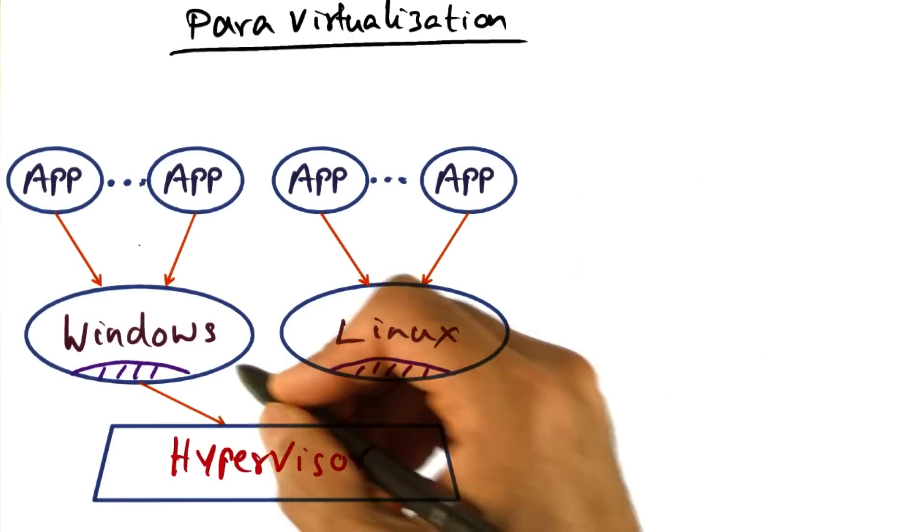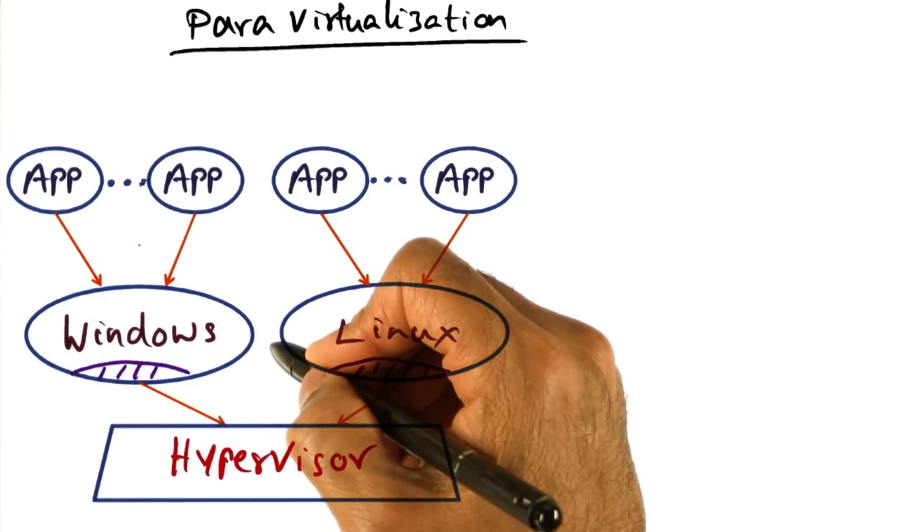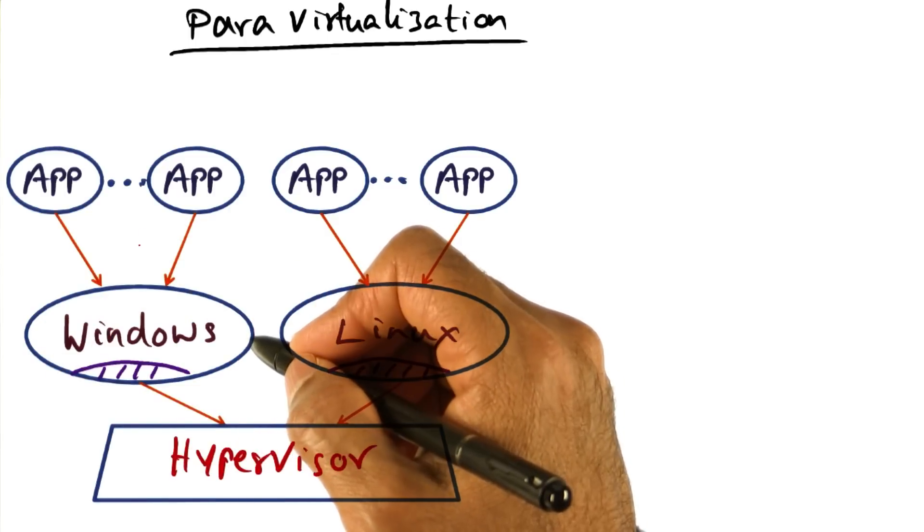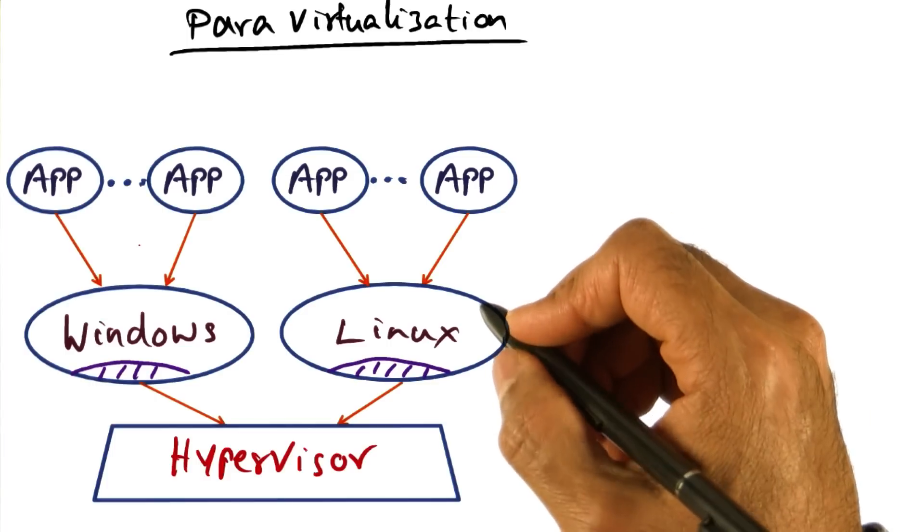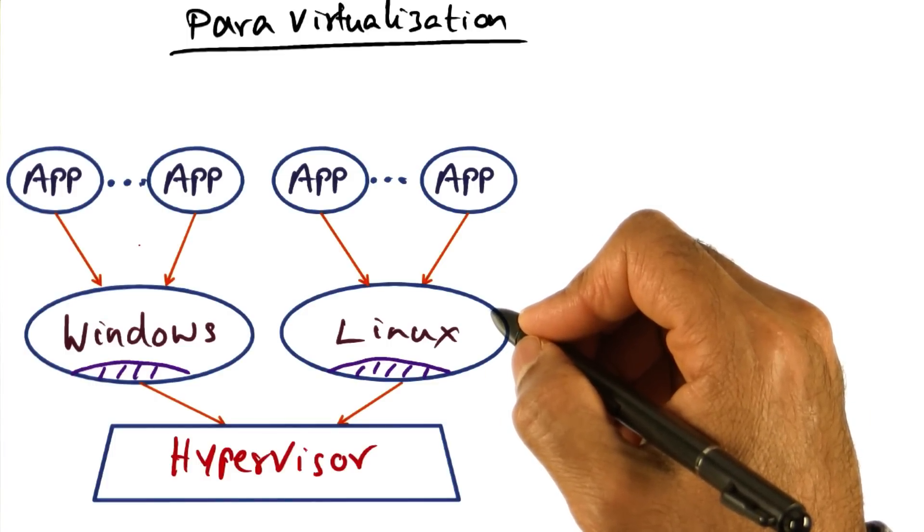Another approach to virtualization is to modify the source code of the guest operating system. If we can do that, not only can we avoid problematic instructions, as I mentioned earlier with full virtualization, but we can also include optimizations.